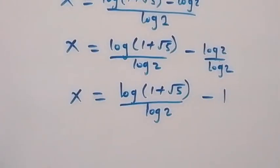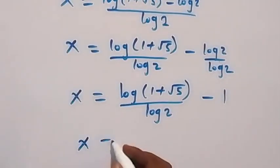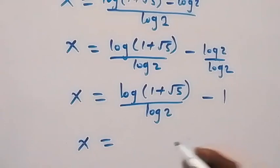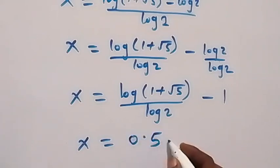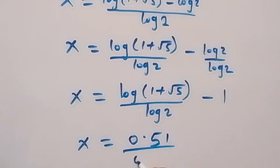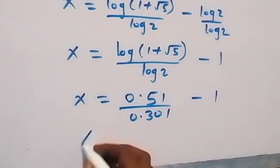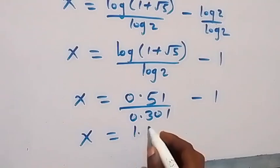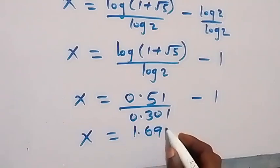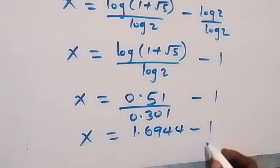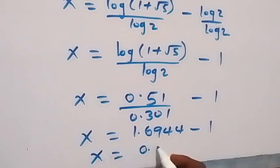When we put this in decimal, we have x equals to log of 1 plus root 5 over log 2. Log of 1 plus root 5 gives us 0.51, and log 2 gives us 0.301. When we divide, we have x equals to 1.6944 minus 1. Subtracting 1, we get x equals to 0.6944.